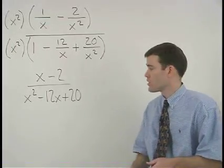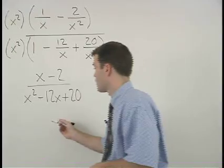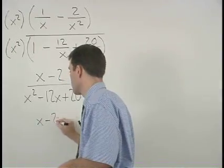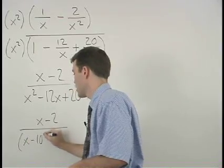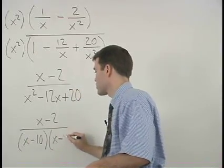Notice that our denominator factors. So we have x minus 2 over x minus 10 times x minus 2.